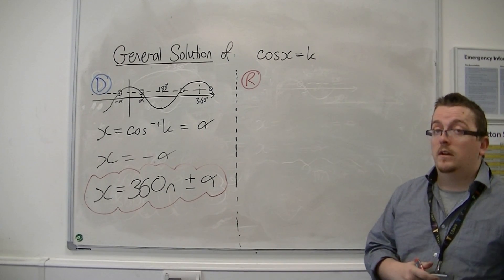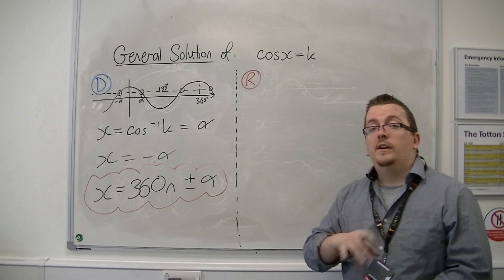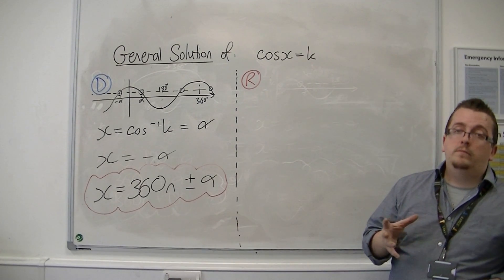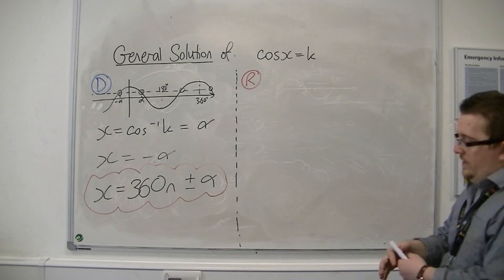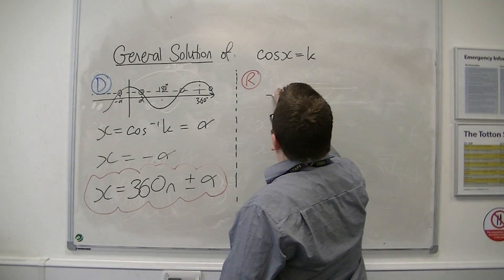You can write it as two if you like, if you want 360n plus alpha, and 360n minus alpha. It's up to you. Now let's have a look at radians. Very similar story.